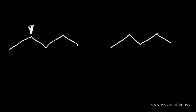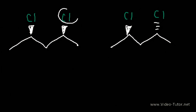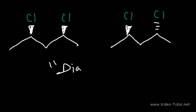Consider these two molecules and describe the relationship between them — using chlorine this time. Notice that the first chiral center remains the same, while the second chiral center changes. When some of the chiral centers change their configuration but not all of them, what you have is a diastereomer.